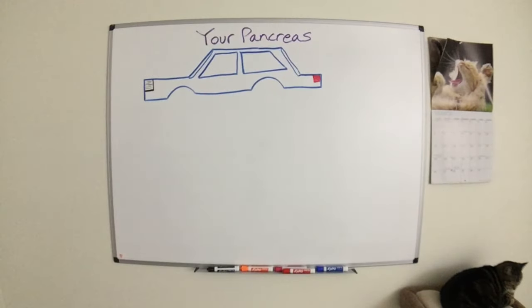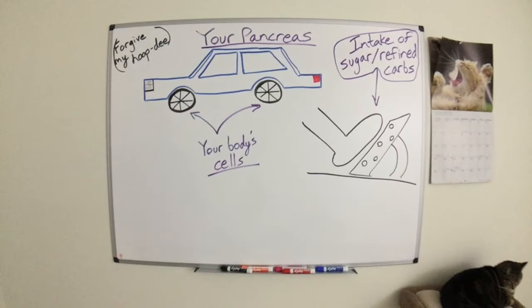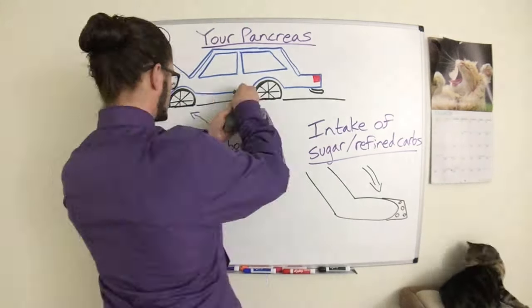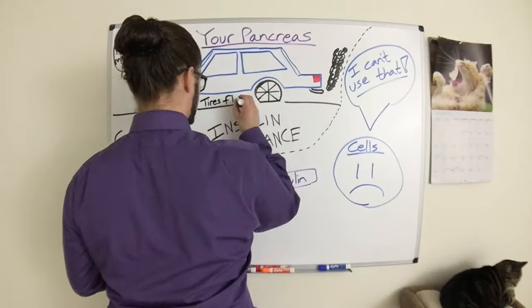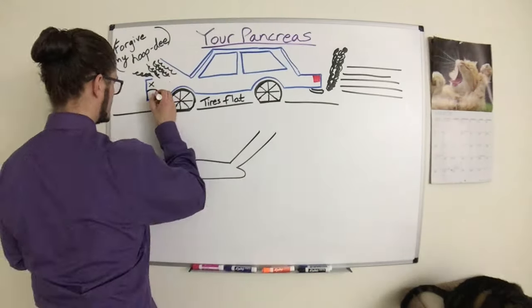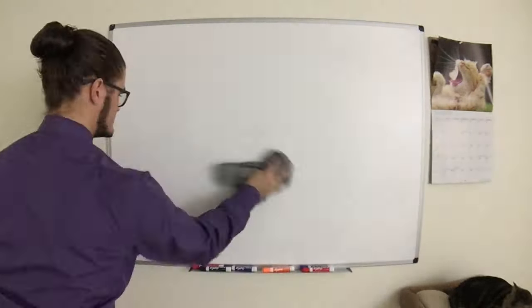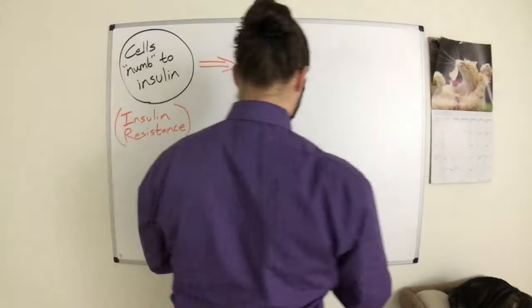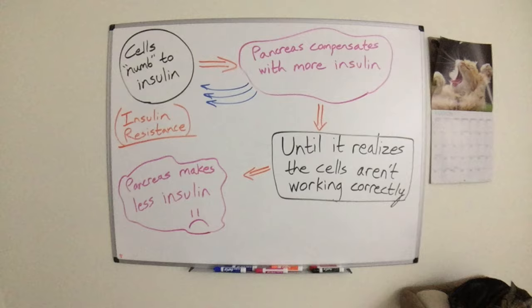To help you envision how this actually goes down, imagine that your pancreas is a car, with your body's cells being the tires and your lead foot representing sugary foods. If you drop the pedal to the metal too suddenly, too often, eventually the tires are going to blow out and the car is going to stop running. Similarly, if you regularly consume too much sugar at once, you may eventually develop insulin resistance — this is when your pancreas produces insulin but your cells can't use it. Imagine this like a car running fine but with flat tires; you keep gunning it until the motor throws a rod and the car dies. If you spend your life consuming sugary foods, your cells become numb to insulin. Your pancreas then tries to compensate by making more insulin, until it realizes the cells aren't working correctly, and then stops making as much insulin. This is type 2 diabetes.